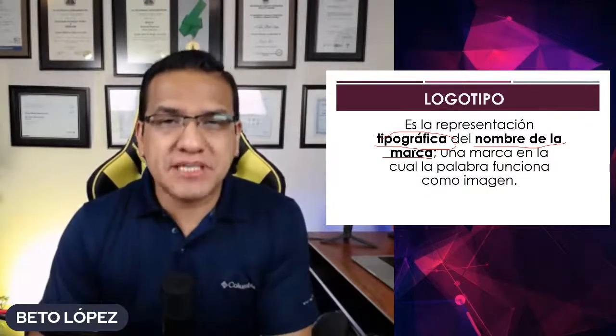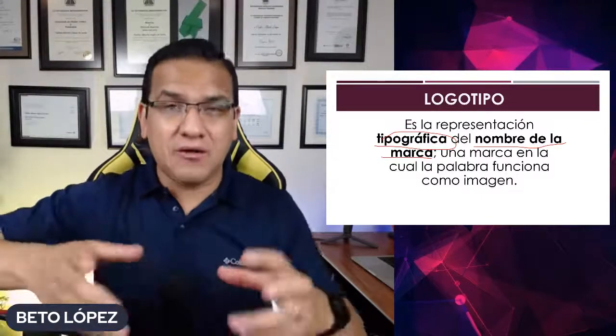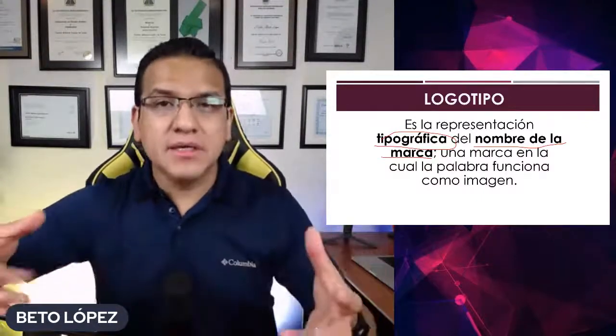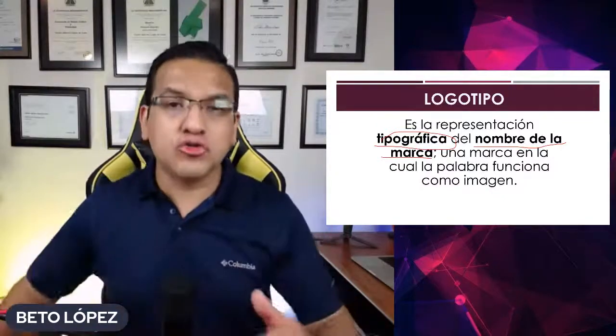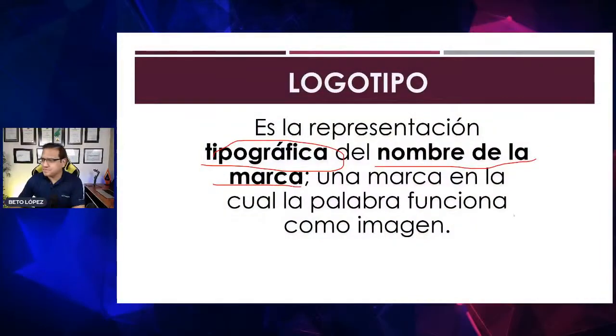Anteriormente, cuando las personas empezaron con la tipografía, le llamaban 'tipos' cuando se aplastaba la letra. La palabra o logo era la palabra, y cuando se imponía le llamaban logotipo. Conforme fue creciendo la imprenta, las personas tenían cajas altas y cajas bajas. Los que imprimieron la Biblia de Gutenberg tomaban de la caja alta las mayúsculas y de la caja baja las minúsculas para no confundirse. A la letra como tal la vamos a llamar logotipo.